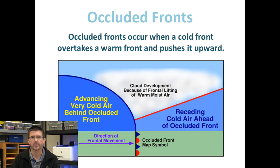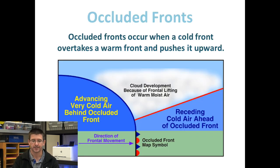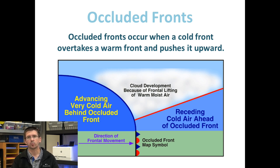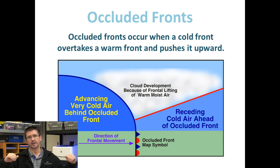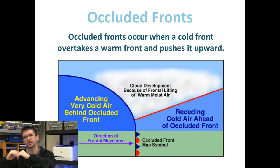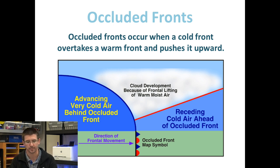The final type of front that we're going to look at is the occluded front. This one's a little less common, but basically what we have for an occluded front is a cooler air mass with a warm air mass behind it, and a much cooler air mass moving very rapidly, pushing the warm air mass up over the cold air mass.